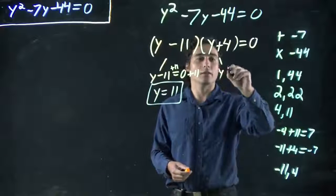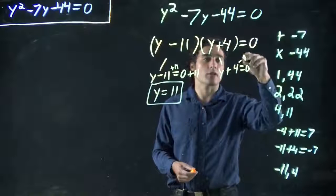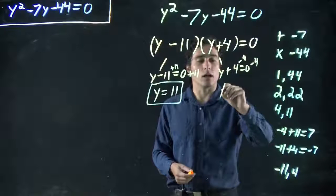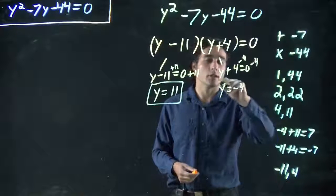And y + 4 = 0. Subtract 4 from both sides. Y = -4. Another solution.